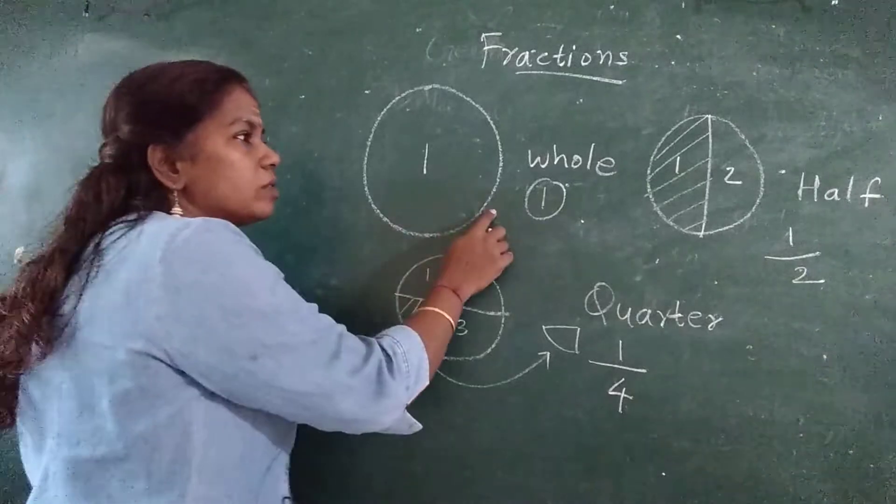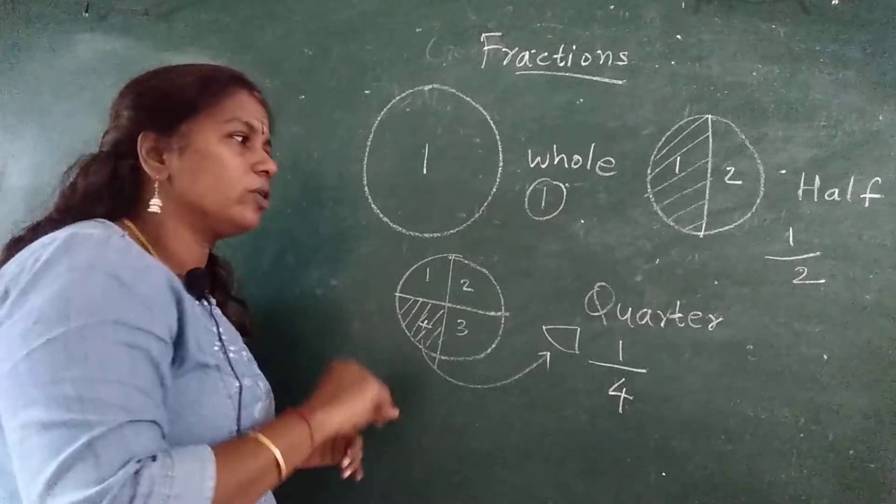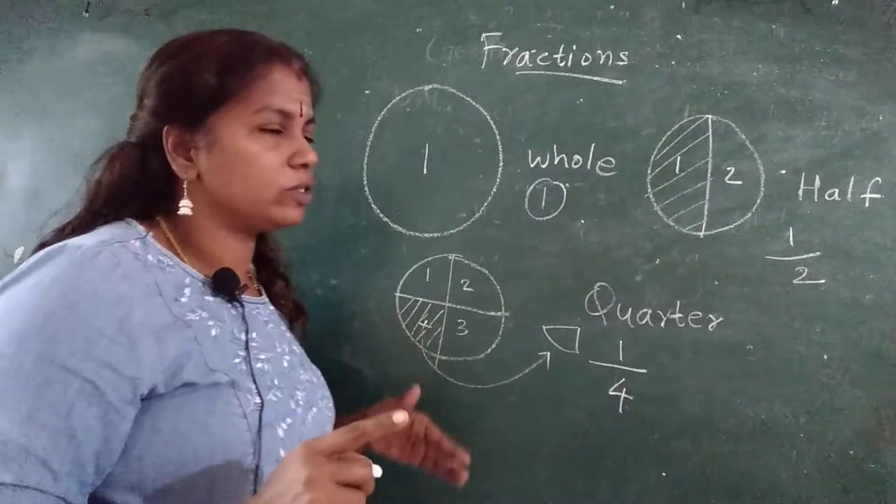You call it as quarter. This is whole, this is half, this is quarter, or you call as one quarter. Understood this?